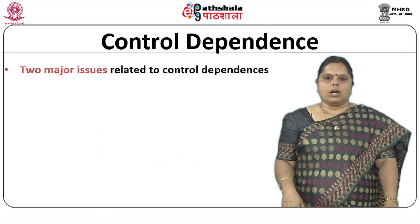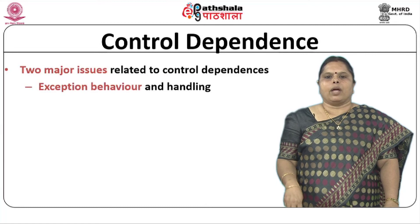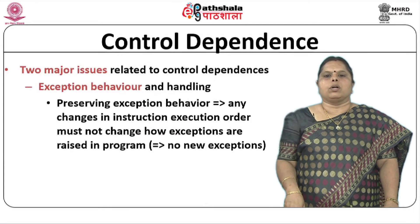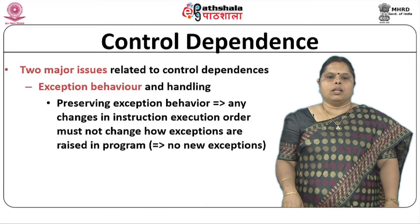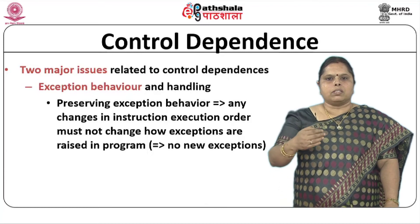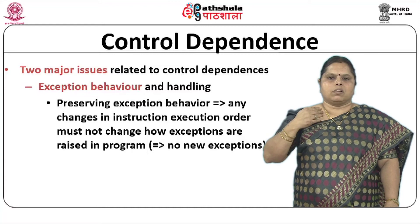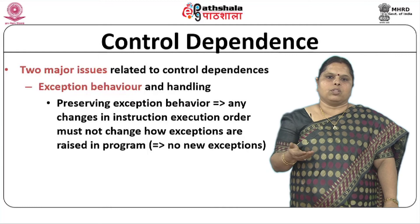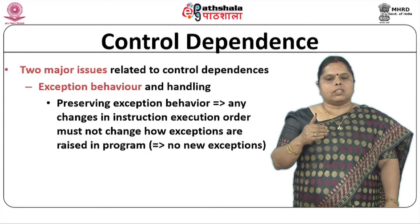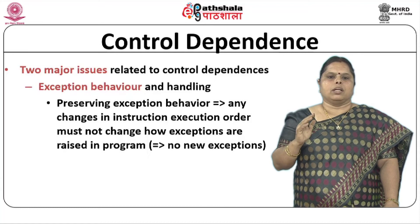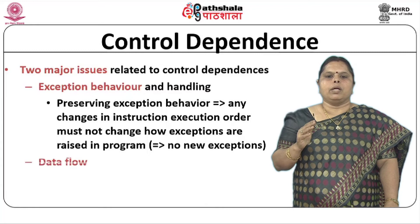When talking about control dependence, there are two major issues to address. The first is exception behavior and handling. Whenever you have an exception, preserving exception behavior means that any changes in instruction execution order should not generate new exceptions that would not have occurred in the original flow. Branches change the control flow, and when you reorder instructions accordingly, new exceptions should not be generated. That is what is meant by exception behavior and handling.